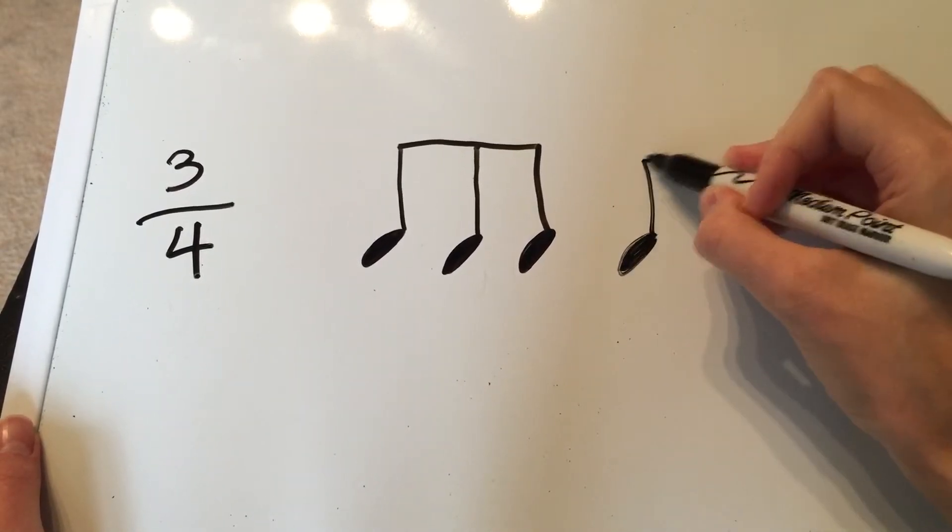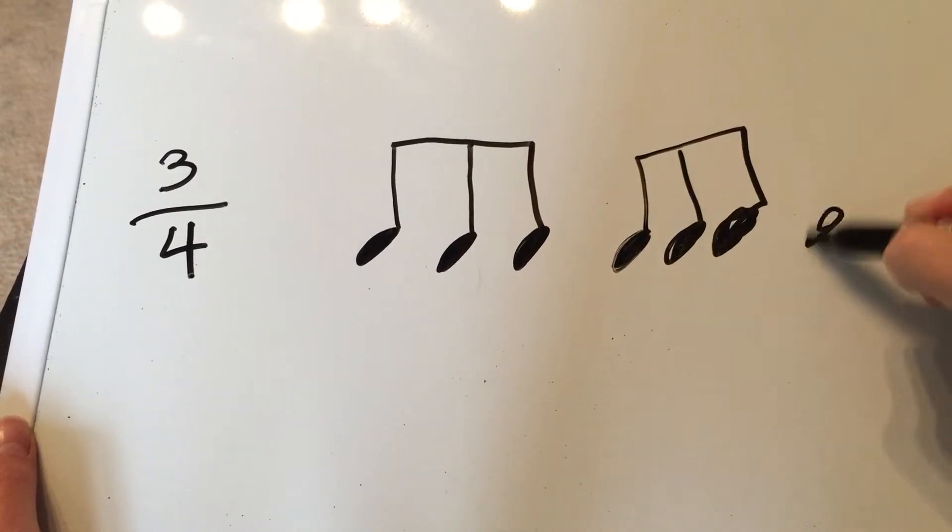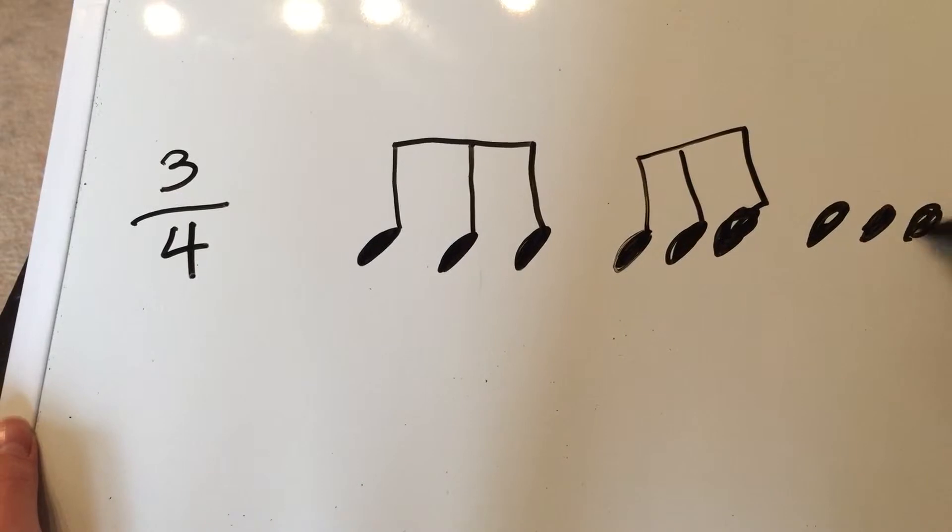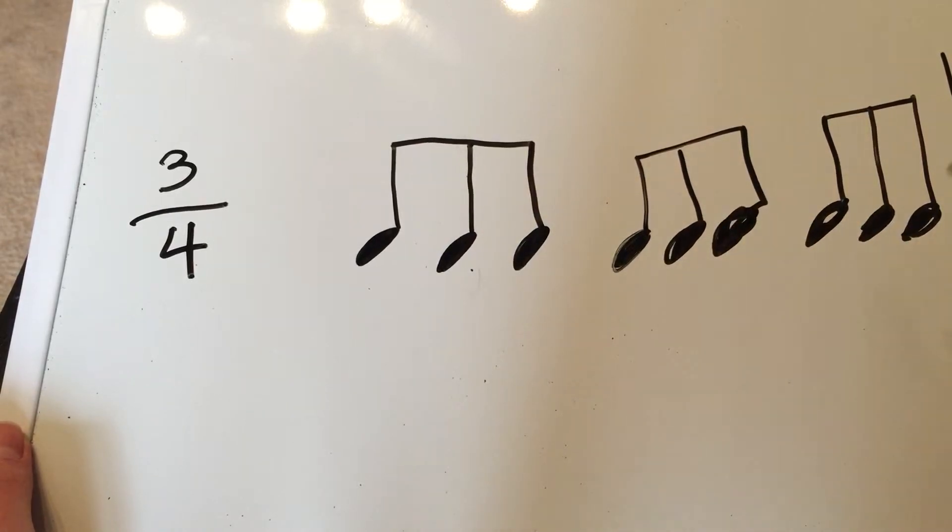So if we were to have all triplets for this measure, this would be a full measure, and each one of these triplets would be one beat.